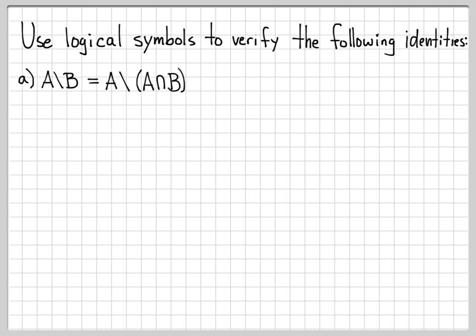What we worked with in the last problem in part A was this identity: the set A difference with B is equal to the set A difference with quantity A intersect B. We already established this with Venn diagrams — we know it's true. Let's do it in a different way using logical symbols. We're going to start with some arbitrary element, and I've decided to start from this side, so we're going to say X is in the set A difference A intersect B.